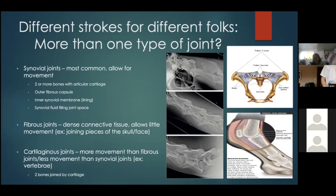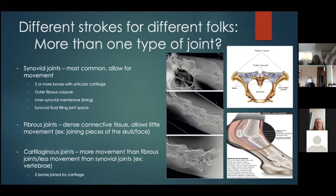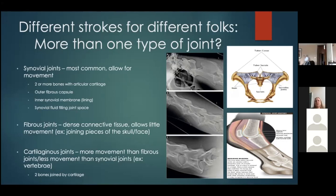Then there are fibrous joints — these are dense connective tissues that don't allow for as much movement. Examples include the joints where bones of the skull meet, or joints in the face where bones come together quite firmly. If you think about those structures, there's not a lot of movement there like you'd see in an elbow or knee.